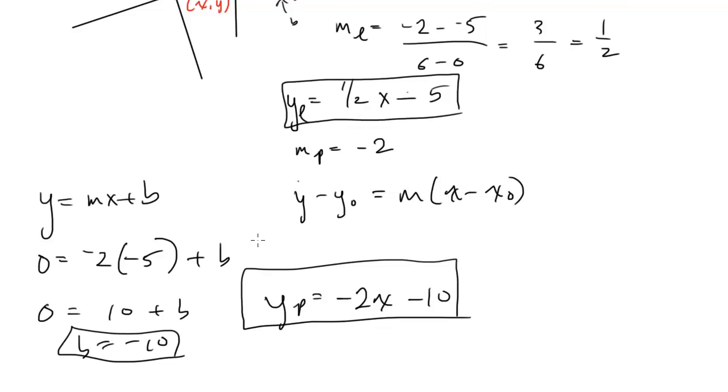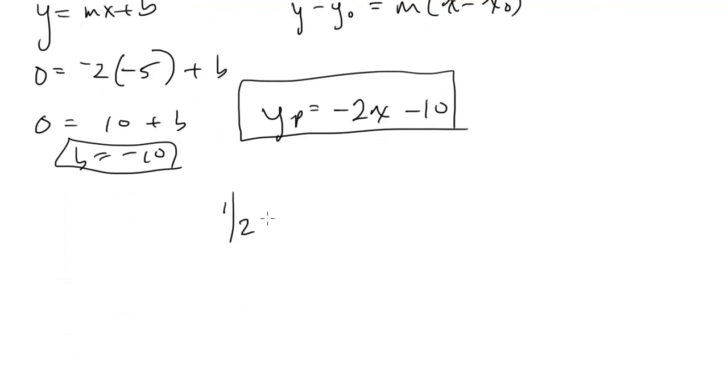Now to find the point of intersection, I set these two equal to each other. So I get one half x minus 5 equals negative 2x minus 10. Bring the 5 over, and I get one half x equals negative 2x minus 5. Add 2x to both sides.